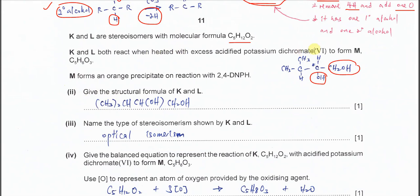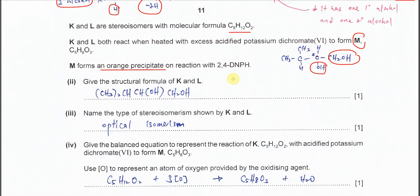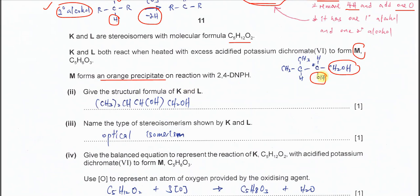Now after that, after they oxidize, it will form M. M form orange precipitate with 2,4-DNPH. So means it shows that it has carbonyl group. Part 2. Give the structural formula for K and L. If you know it looks like this then you can give the structural formula. So it's CH3CH(CH3)CH2CH2OH.